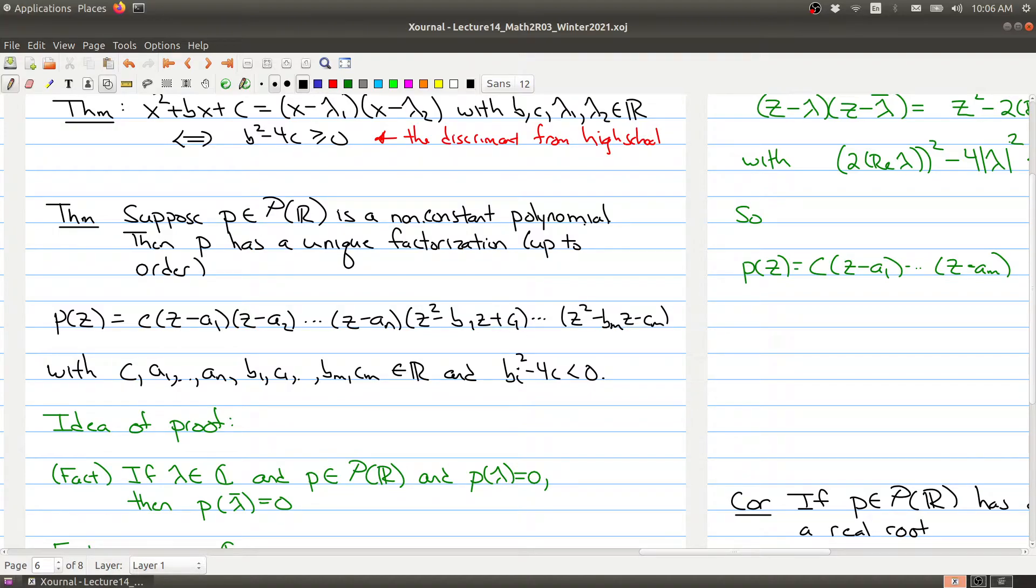So suppose that p is a non-constant polynomial. Then p has a unique factorization up to order where we have a bunch of linear terms where each of the aᵢ's are real numbers, and then a bunch of quadratic terms where each of these quadratic terms can't be factored any further. These quadratic terms all satisfy the property that bᵢ² - 4cᵢ is less than zero, so these terms can't be factored. The aᵢ's, the b's, and the c's, they're all real numbers. And this is how much you can break down your polynomial.